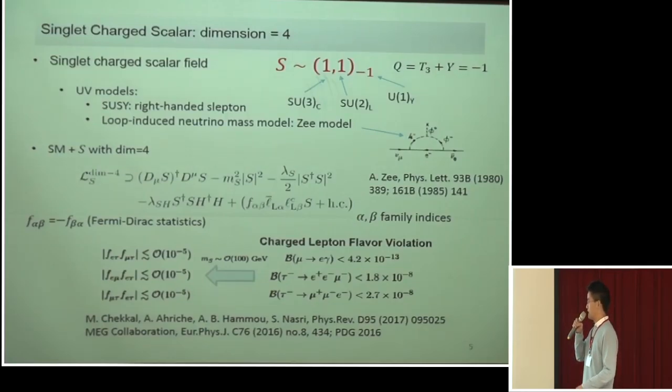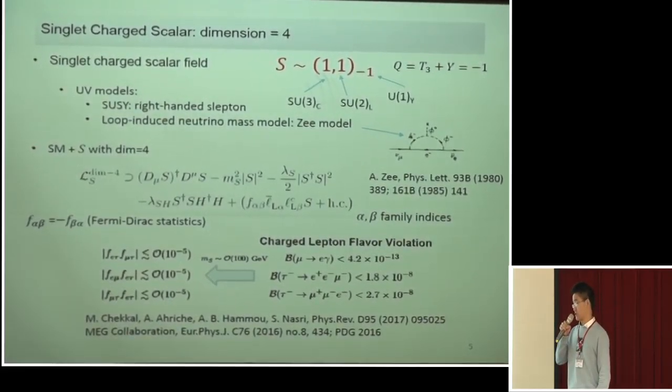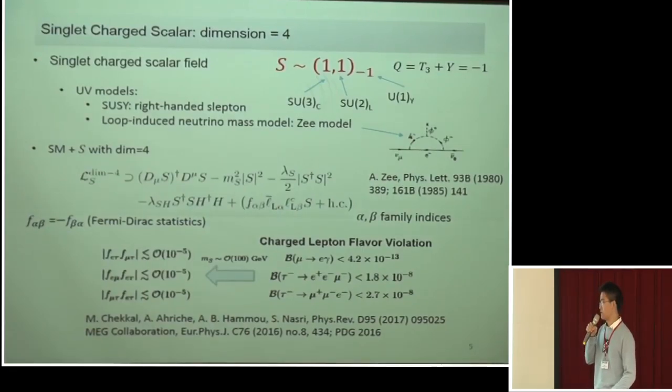So the interaction of the standard model plus the singly charged scalar can be described by this dimension 4 Lagrangian. This term arises from the kinetic term for the singly charged scalar. And this is the mass term, and this is the scalar potential. And this term exists in the Zee model, and the alpha beta are the family indices. Due to the fermion derivative in the lepton doublet, the coefficient should be anti-symmetric. So it can induce the charged lepton flavor violation. Considering the recent constraint, the combinations of the coefficients are highly constrained. Unless there is a hierarchy in the coefficients, all of these coefficients are semi-constrained. So in our case, we do not consider this interaction.